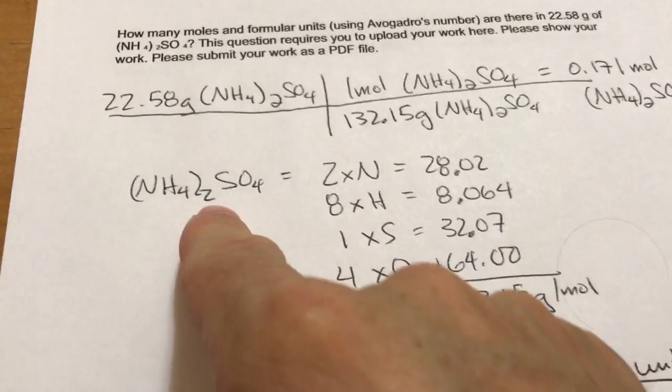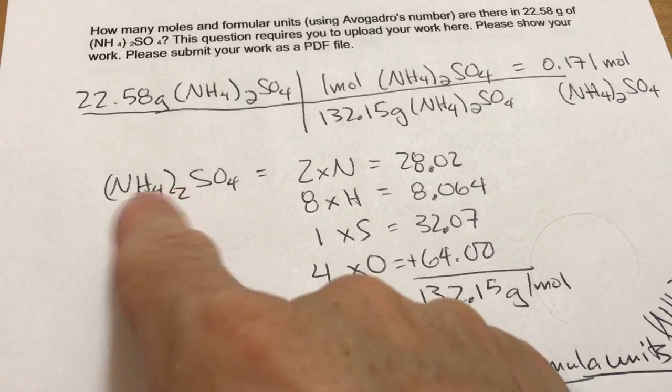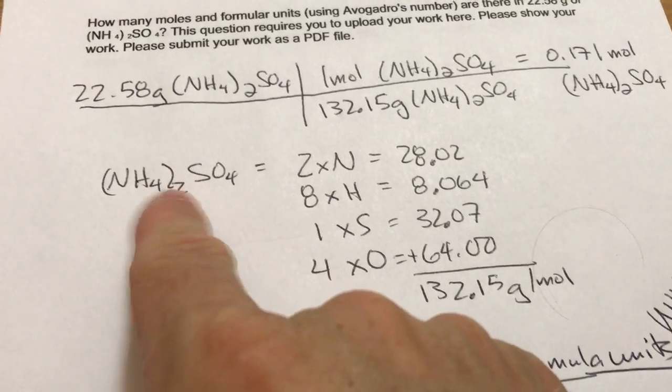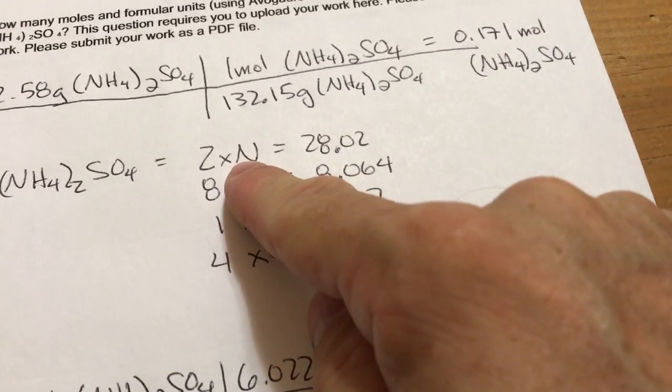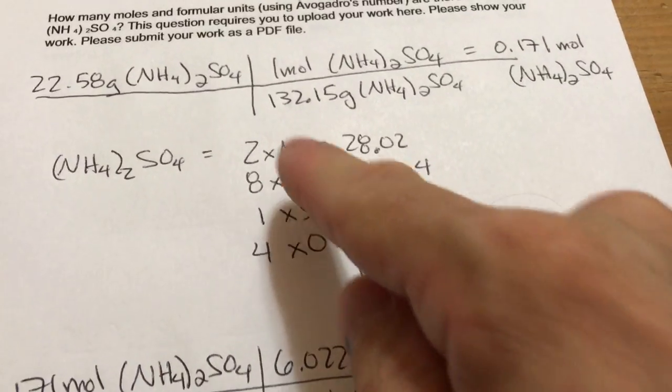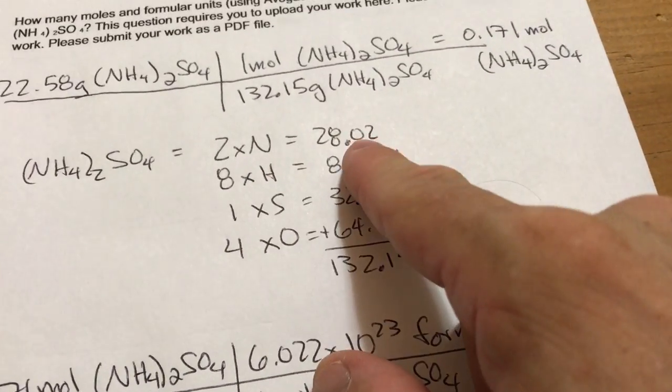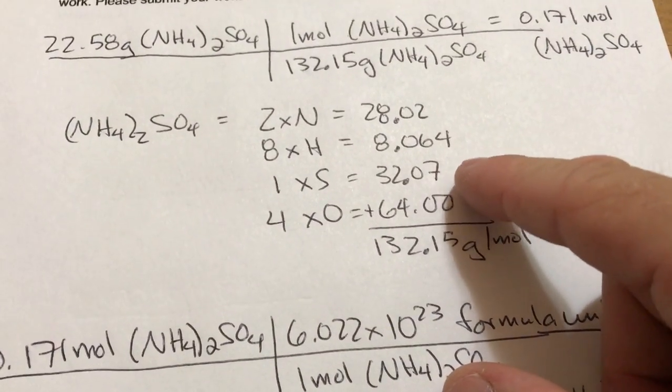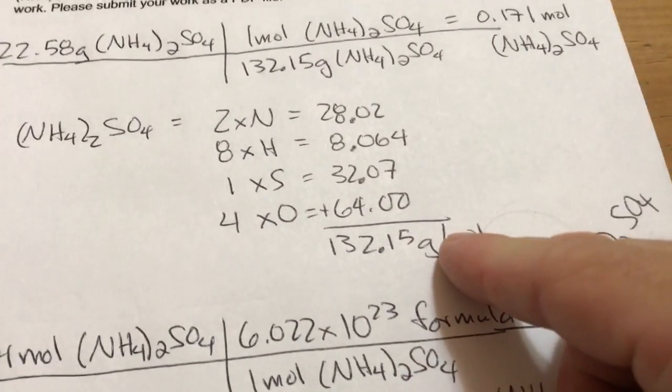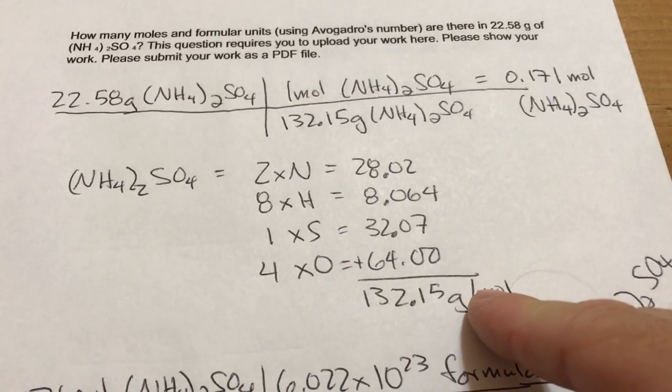two because it's two times this whole thing in parentheses. So two nitrogens, eight hydrogens, and then two times N. N on the periodic table is 14.01. That leads to 28.02. Similarly for hydrogen, sulfur, and oxygen. That adds up to 132.15.